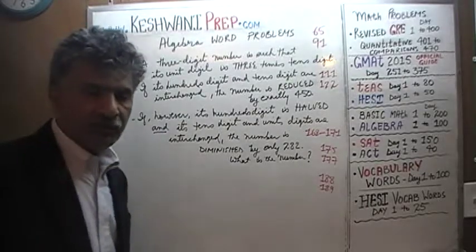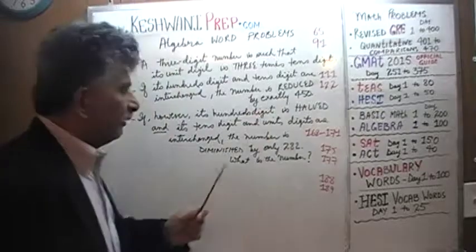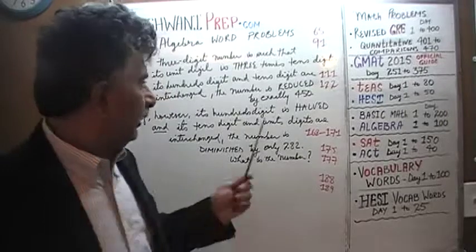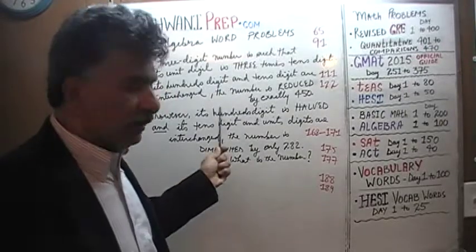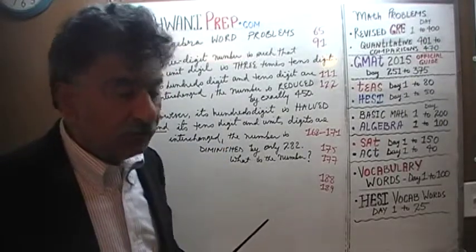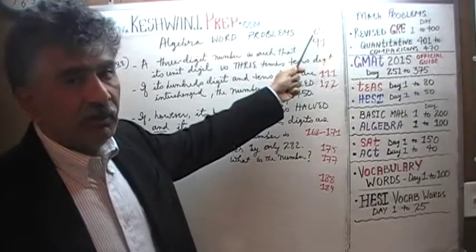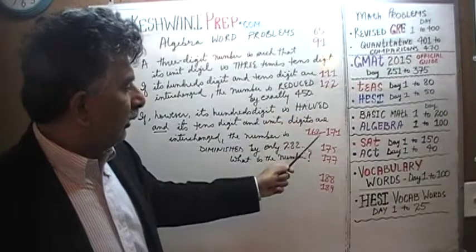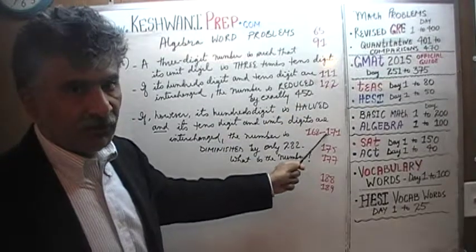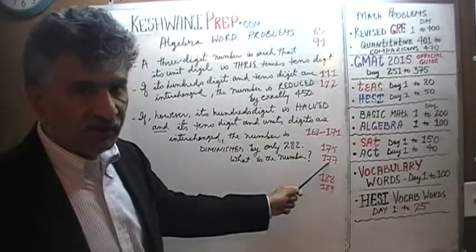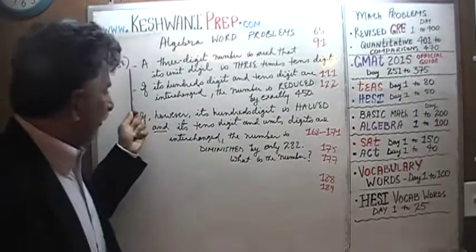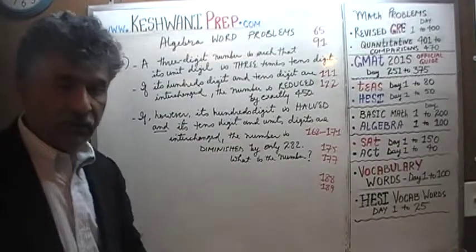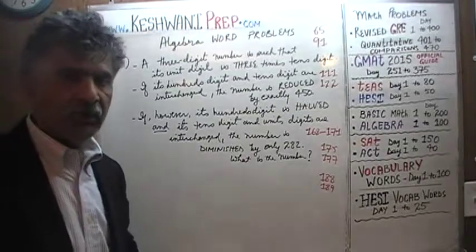For those of you who have been watching these problems in the proper sequence, you will recognize that this problem is very similar to a whole bunch of problems we have already done. The very first similar one was problem number 65, which dealt with a two-digit number. Then we did 91, 111, 122, 168, 169, 170, 171, 175, 177, and this one is 188. Tomorrow we will do one more on the same topic: number 189.